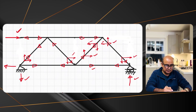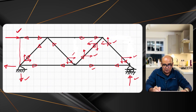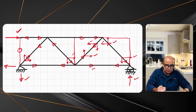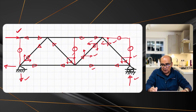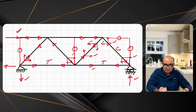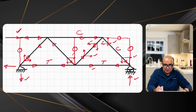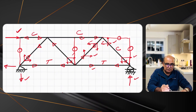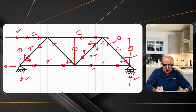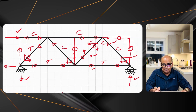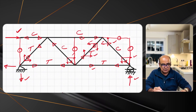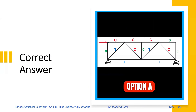Let's restore all the removed members: one here, one here, one here, and one here — all zero force members. Now summarizing: we have compression in the outer top chord, tension in the bottom chord members, compression in certain inclined members, and tension in others where arrows point away from the joint. The correct answer is Option A.